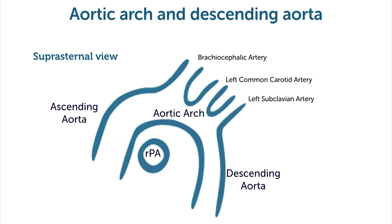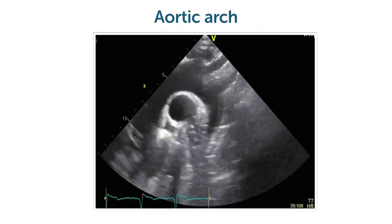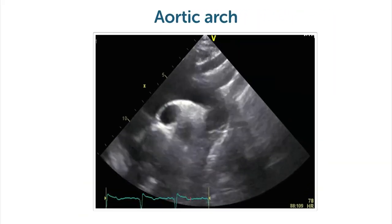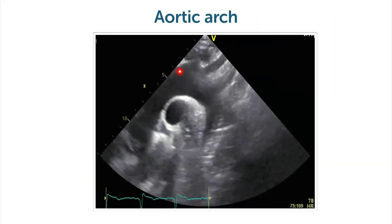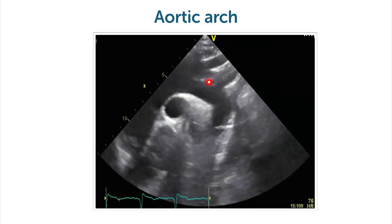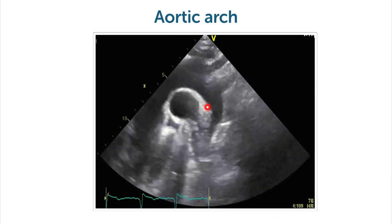Here we can also measure — for example here or here — and sometimes we're even able to measure parts of the descending aorta. This is the view that we will get: the aortic arch right here, with the ascending aorta, the arch itself, and the descending aorta.